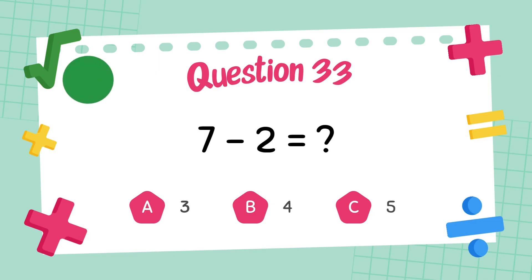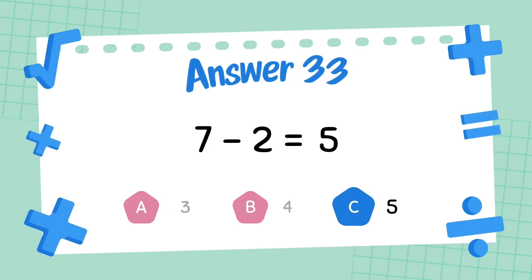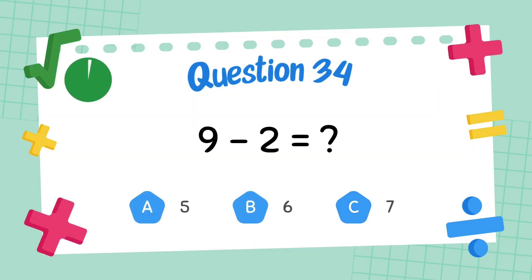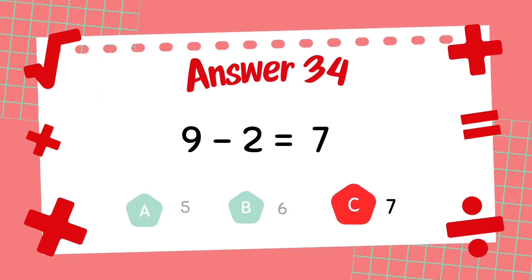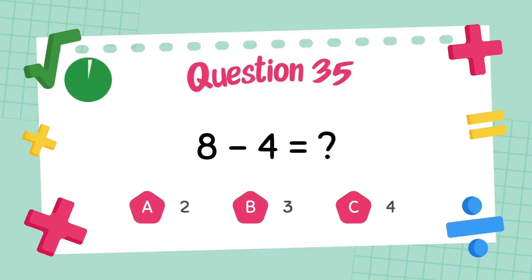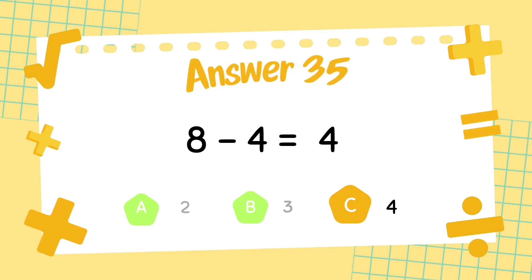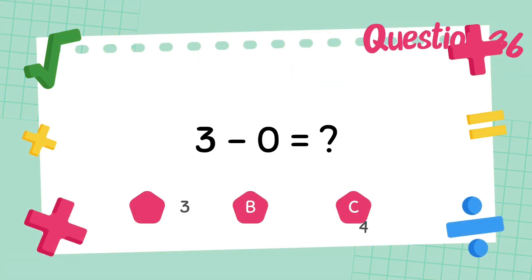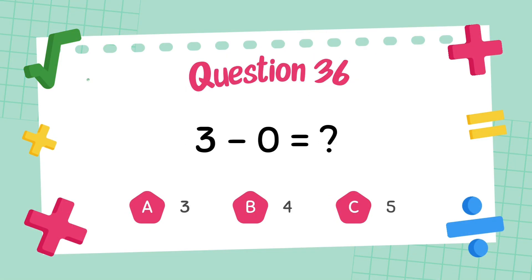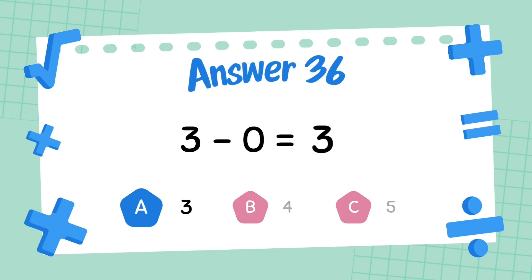What is 7 minus 2? The answer is 5. What is 9 minus 2? The answer is 7. What is 8 minus 4? The answer is 4. What is 3 minus 0? The answer is 3.